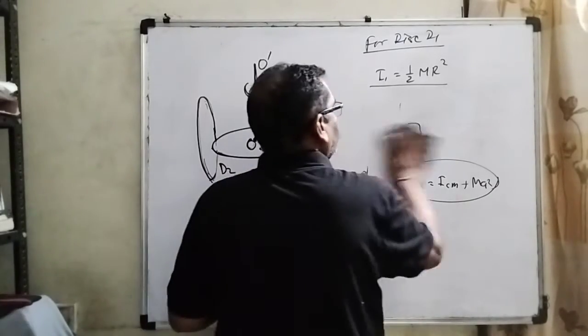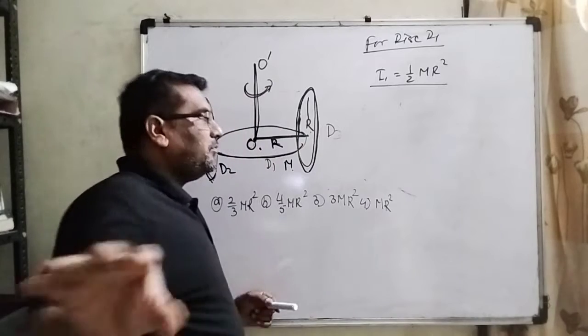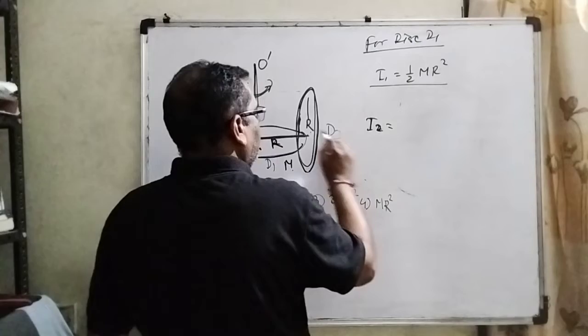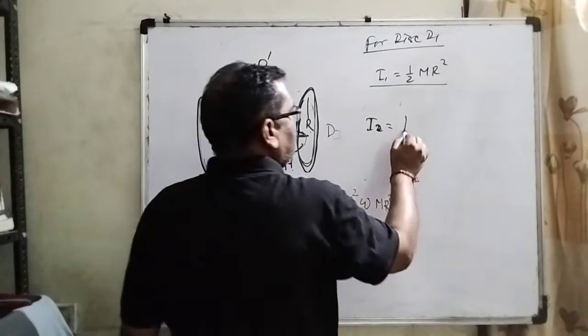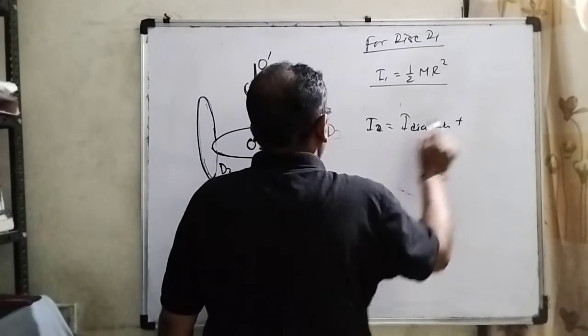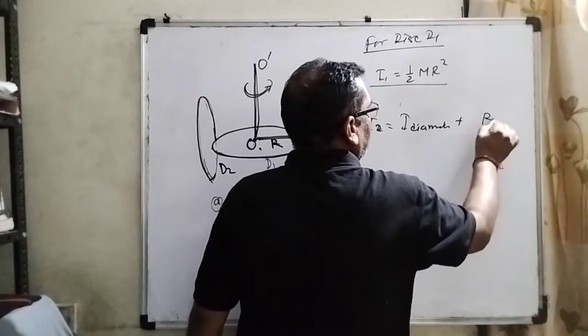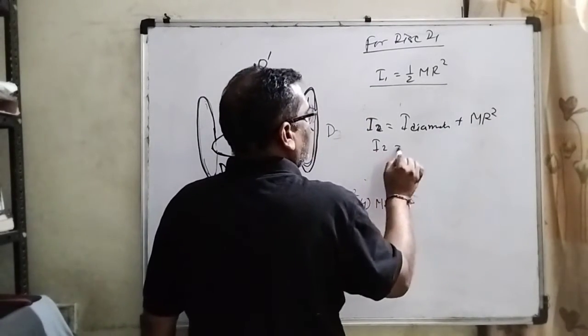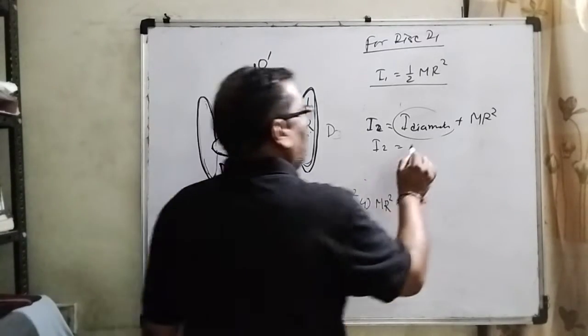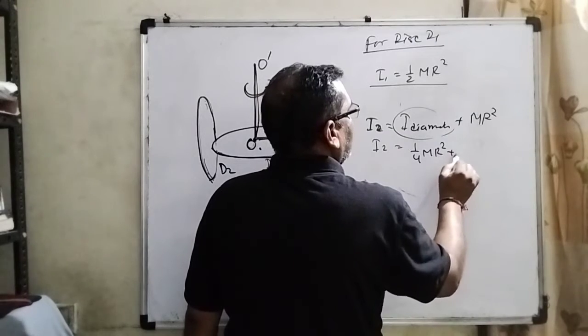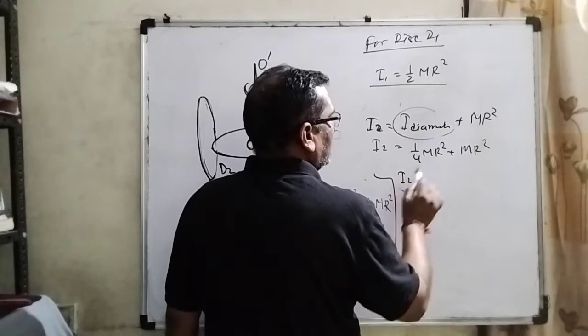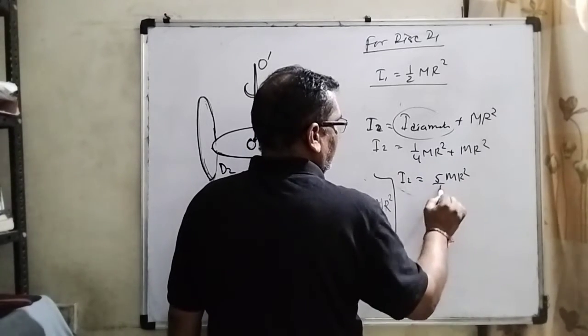So now we are using here for the I2. Here we have to find out the moment of inertia of this disk along the diameter and product of the distance. What is the distance? R² and mass. Then I2 equal to, moment of inertia along the diameter, 1/4 MR² and this is MR². I2 equal to 5MR²/4.